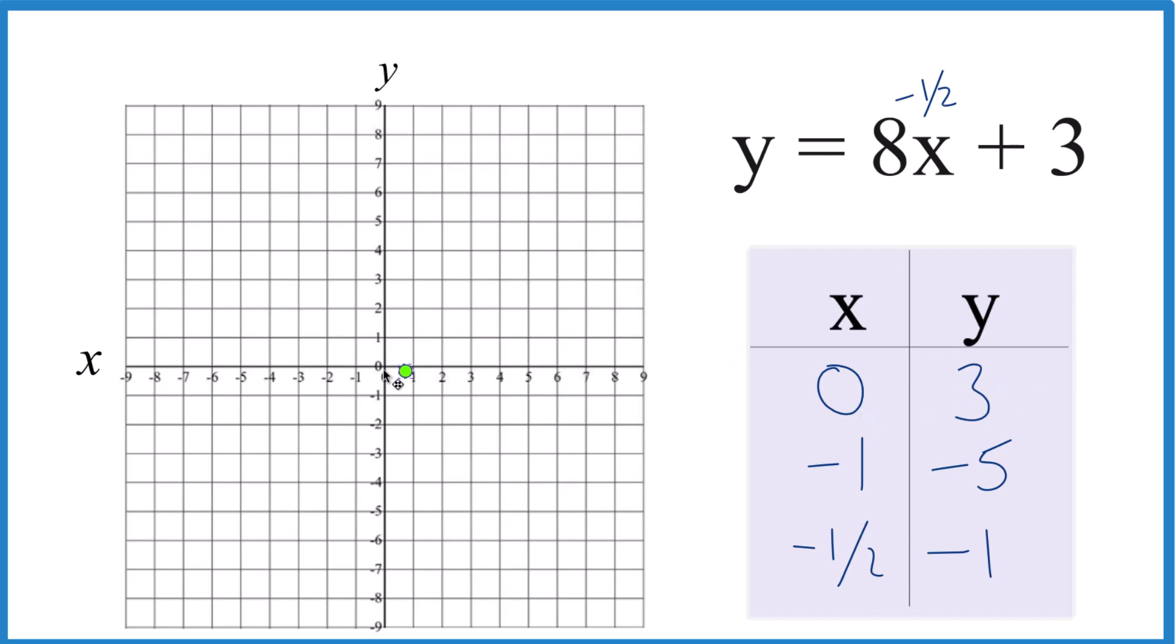X is 0, y is 3 right there. X is negative 1, y is negative 5, so negative 1 down, negative 5. Then we have x is negative 1 half, y is negative 1. So x is negative 1 half, y is negative 1, and look at that. There's the line. Let's put a line through that.